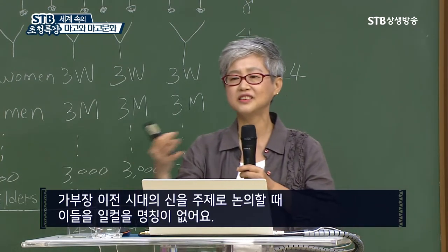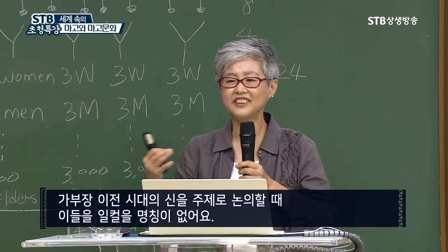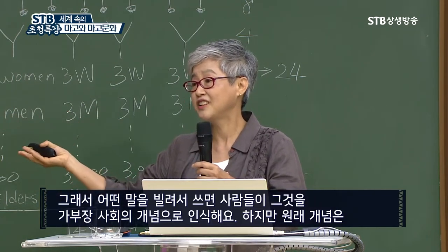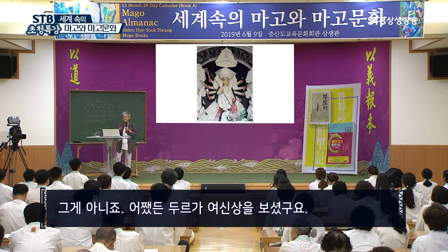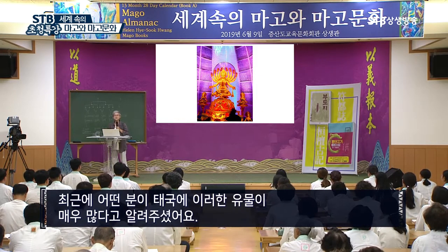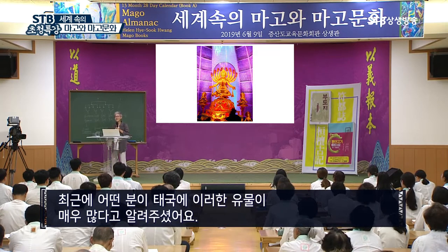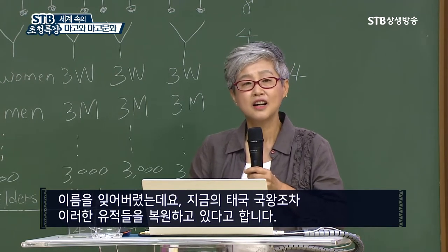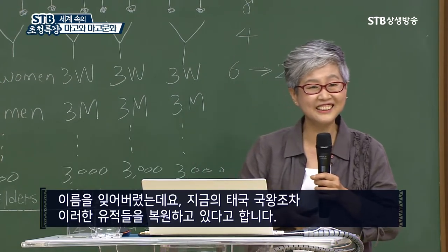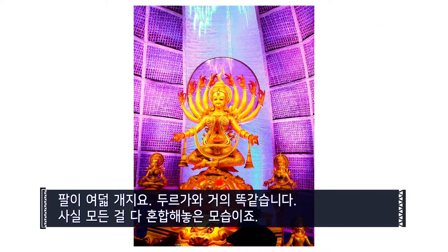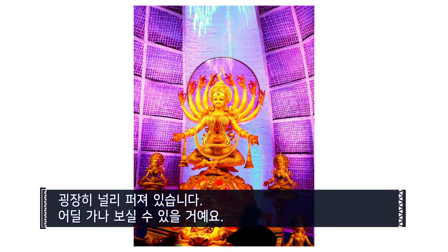When we talk about this pre-patriarchal divine, we don't have languages — it's very difficult. When we use that language, people associate it with the patriarchal version, but no, that's not the one. Anyway, this is a Durga image. And relatively recently, someone informed me Thailand has a lot of images — even the modern king of Thailand is rebuilding these images. And eight arms — it's just like Durga, a mixture of everything. Very prevalent.